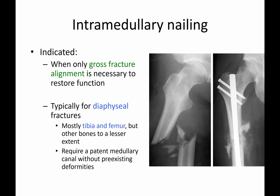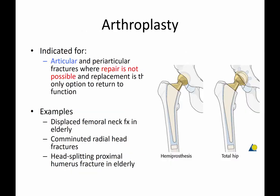Intramedullary nailing is indicated when only gross fracture alignment is necessary to restore function. It's not typically a compression technique and is used for diaphyseal fractures — mostly tibia and femur, but sometimes upper extremity fractures. It requires a patent medullary canal without pre-existing deformities because the rods are rigid and only come in certain shapes and sizes. If a patient has a deformity or a canal that's too narrow, the commercially available rods may not fit.